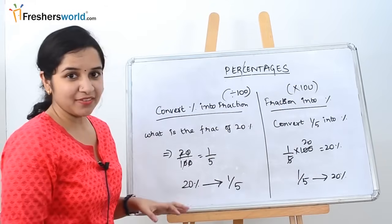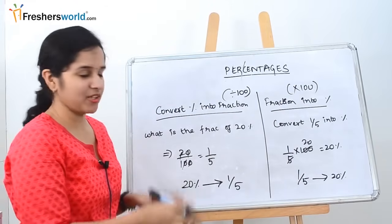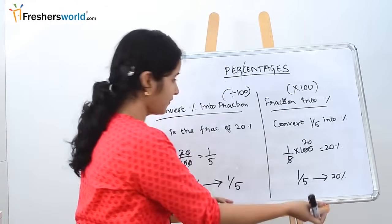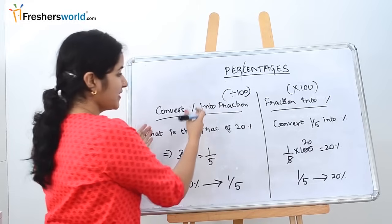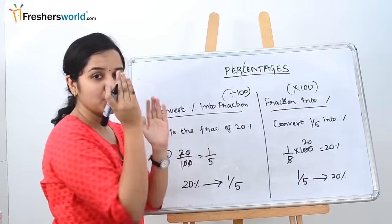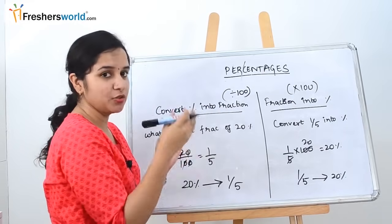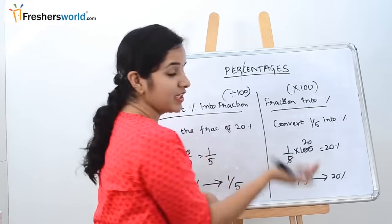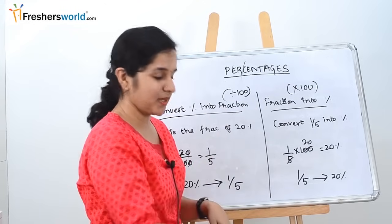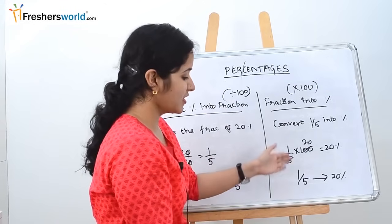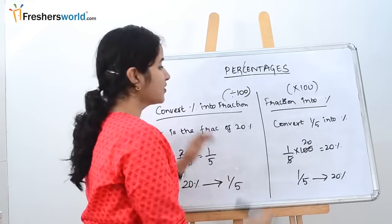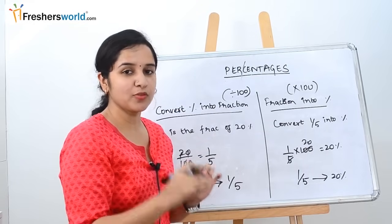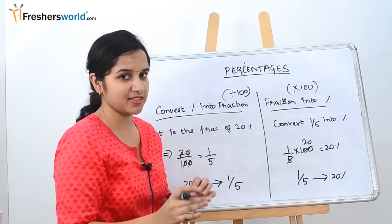If you notice, we have taken the same question in both cases — it is the vice versa of each other. Percentage to fraction: 20% converts to 1/5. Fraction to percentage: 1/5 converts to 20%. These are the basic concepts you should know before solving percentage problems.